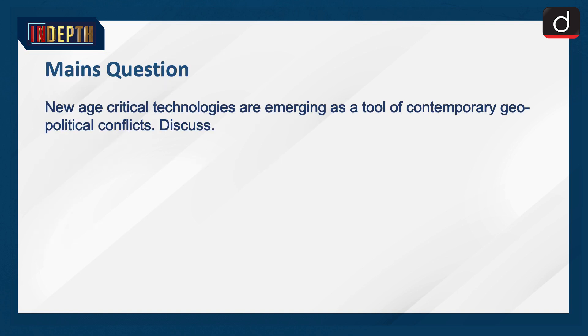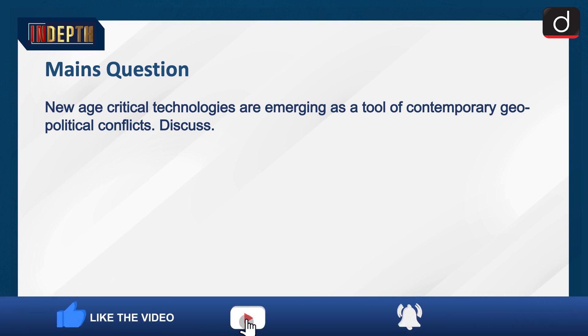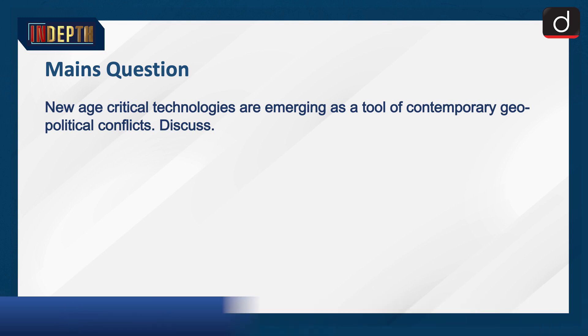Mains question: New age critical technologies are emerging as a tool of contemporary geopolitical conflicts. Discuss. That's all for today. Stay tuned for the next episode. Thanks for watching.